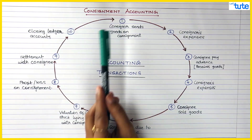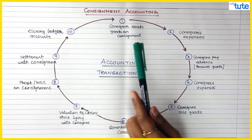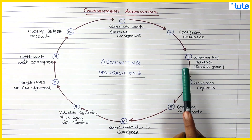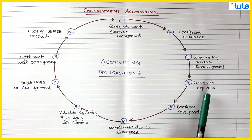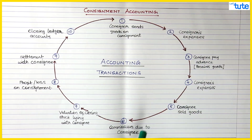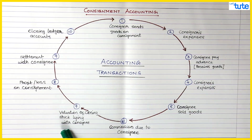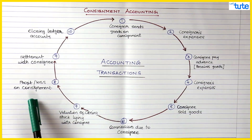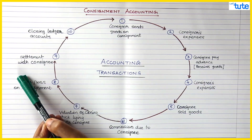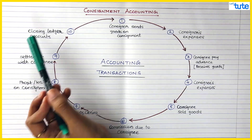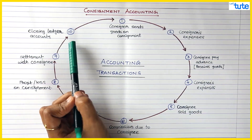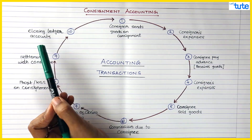Quick revision: consigner sends the goods, consigner spends expenses, consignee might pay advances, consignee incurs expenses, consignee sells the goods, commission is due to consignee, we do closing stock valuation and pass the entry, then we find out profit or loss on consignment for all these transactions, then there may be settlement or the balance is carried forward, and finally all ledger accounts in the books of consigner and consignee are closed.